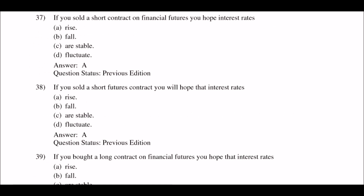Next question: if you sold a short contract on financial futures, you hope interest rates — option A: rise; option B: fall; option C: are stable; option D: fluctuate. The right answer is option A: rise.